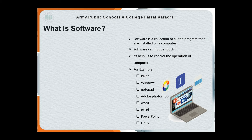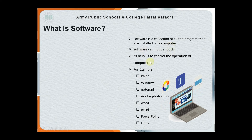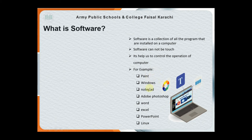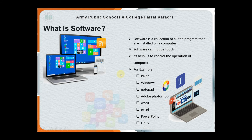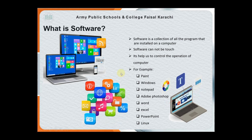So what is software? Software is the collection of all programs that are installed on a computer. Software cannot be touched. It helps us to control the operation of the computer. For example, we have Paint, Windows, Notepad, Adobe Photoshop, Word, Excel, PowerPoint, and Linux. These are all software that you can use on a computer.